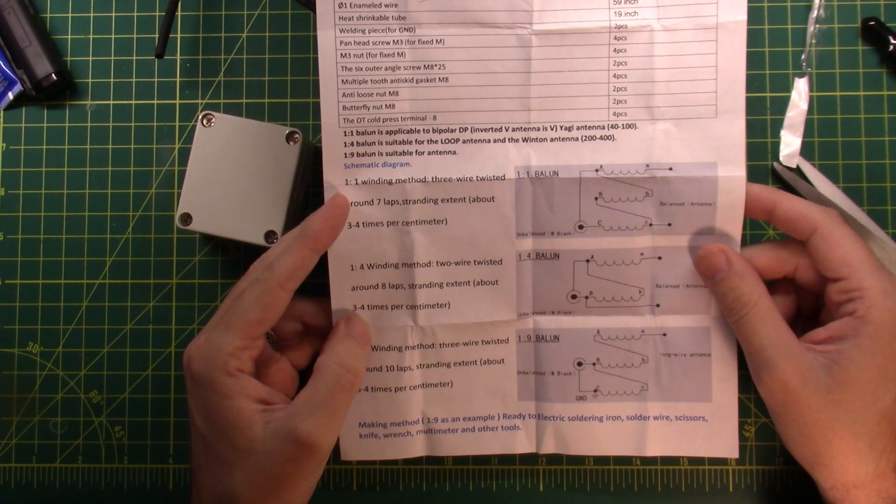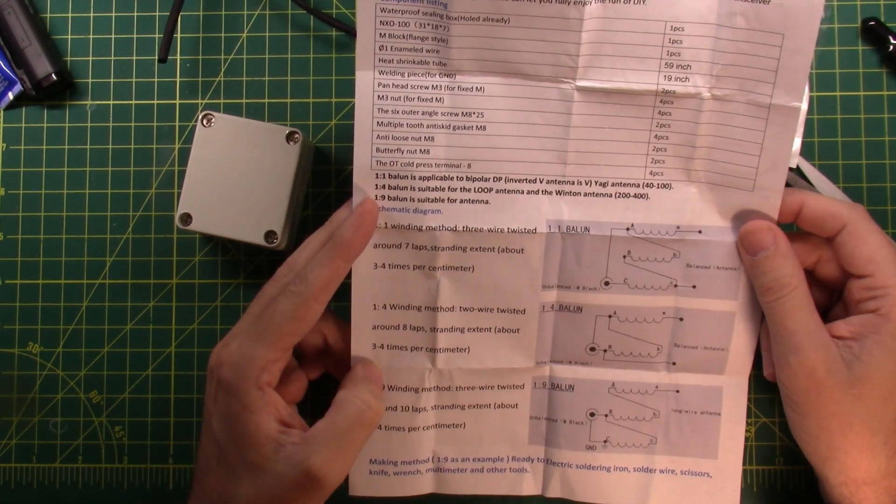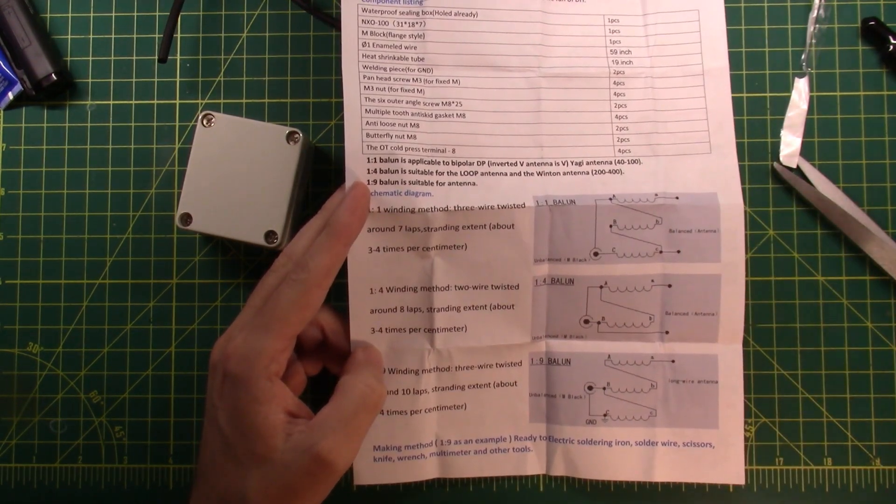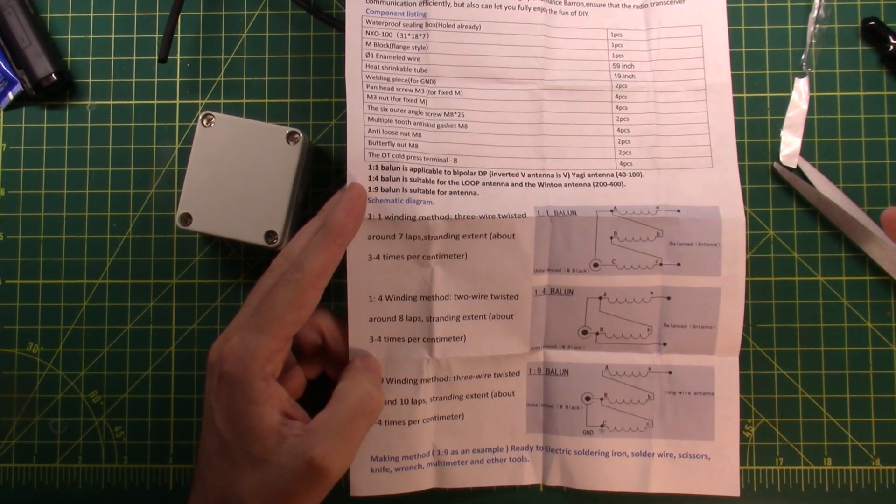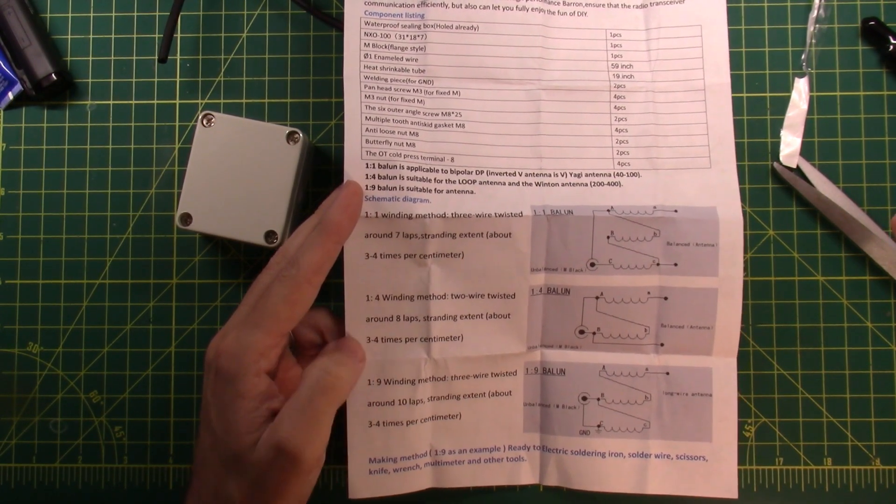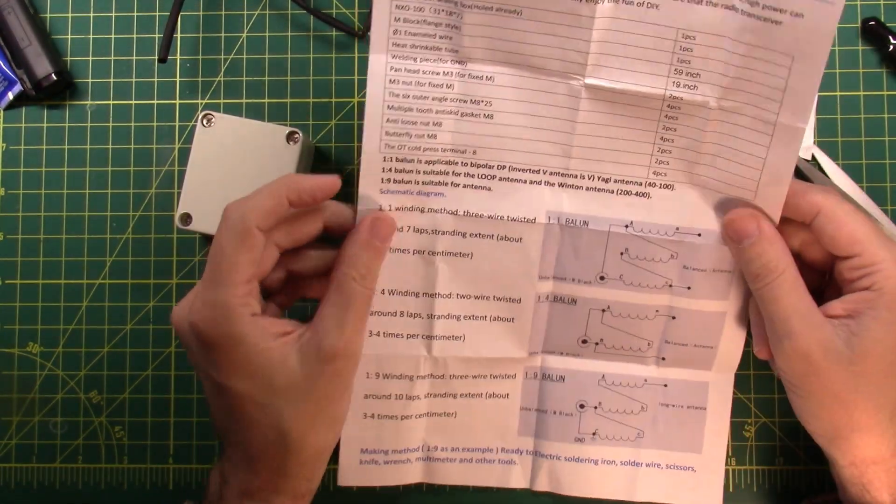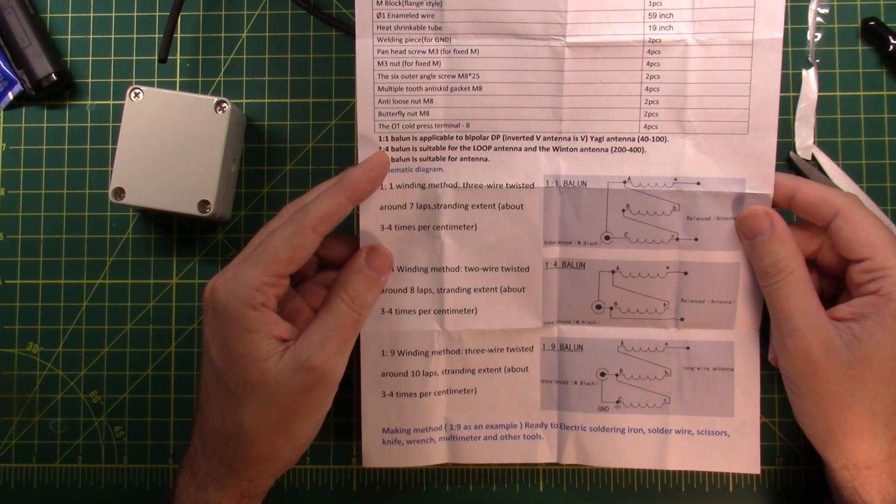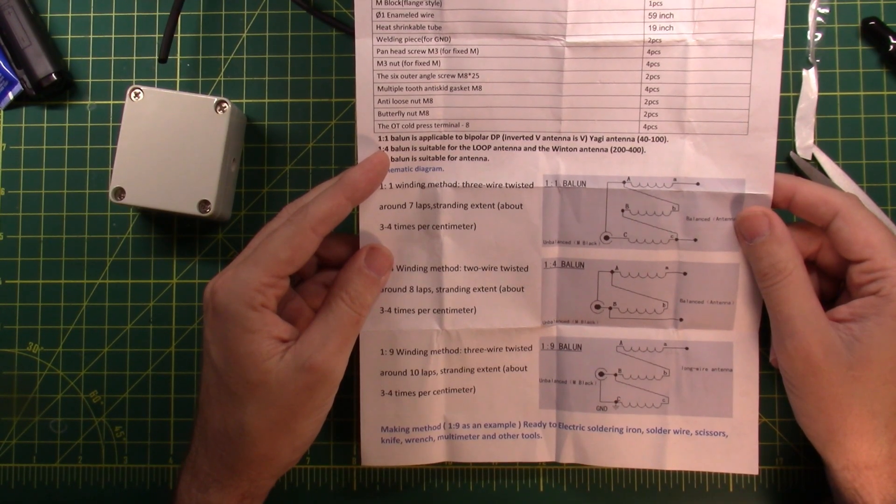Four-to-one winding method: two wire twisted around eight laps, stranding extent three to four times per centimeter. So again you take two wires, twist them together instead of three for the one-to-one, run it through eight times and then you're good there. One-to-nine or nine-to-one - I don't know why they're written backwards, maybe because we're backwards and everybody else is right. Winding method: three wire twisted around ten laps, stranding extent about three to four times per centimeter.